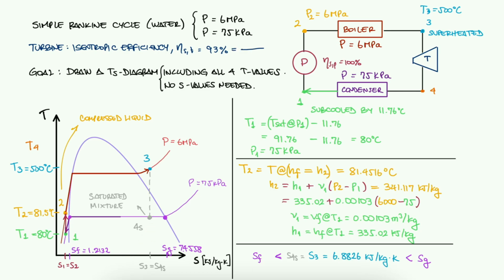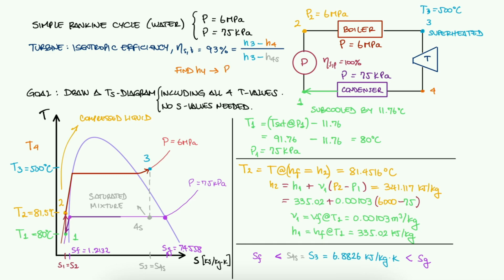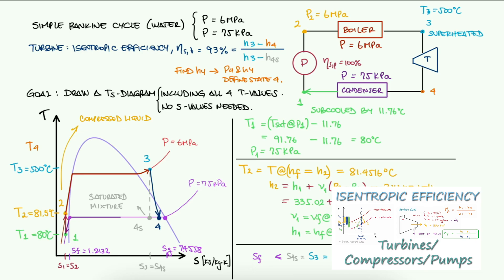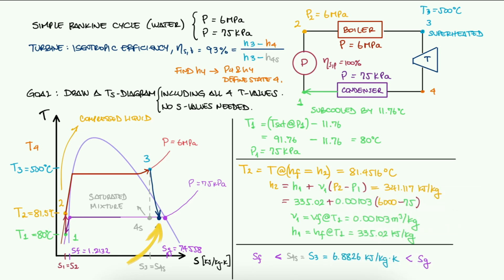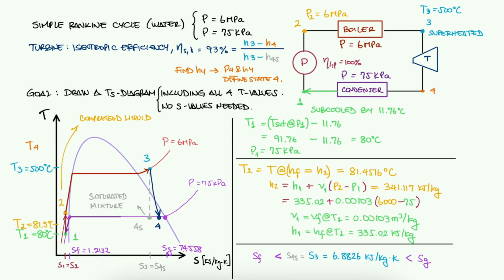Now we can definitely perform more calculations here, like I just said. But with an isentropic efficiency value of 93%, we know that the real turbine process is going to move slightly to the right to get to 4. We can safely assume that the isentropic efficiency is high enough for 4 to still be located inside the dome, on the same pressure line, which means that the temperature at 4 is the saturation temperature we found earlier.